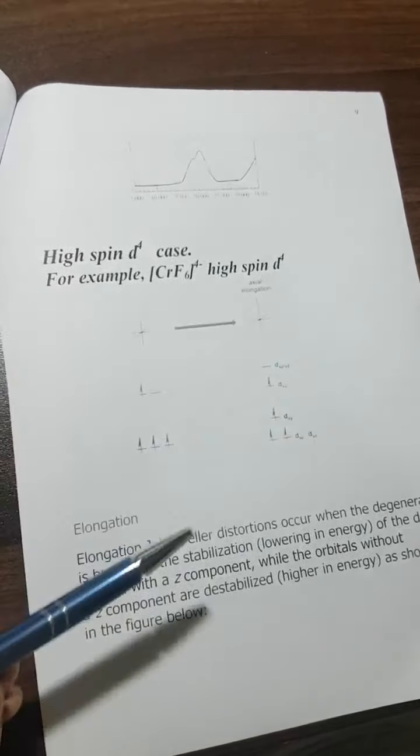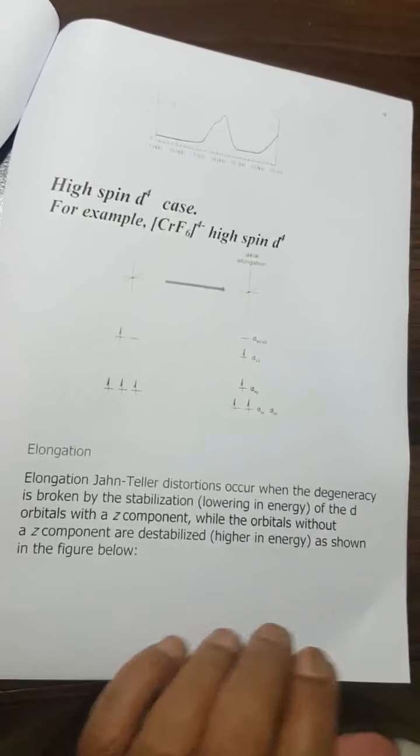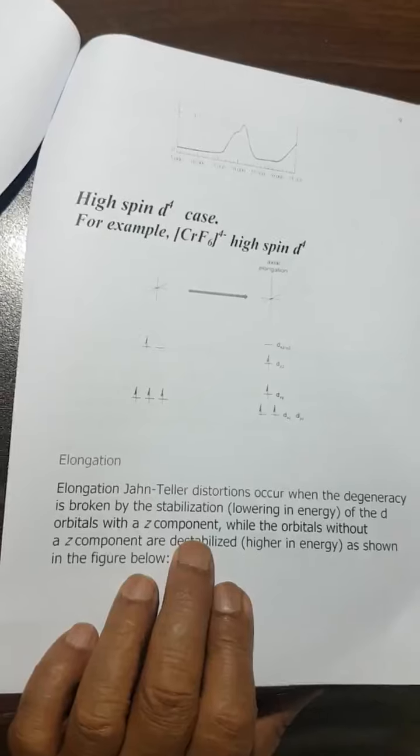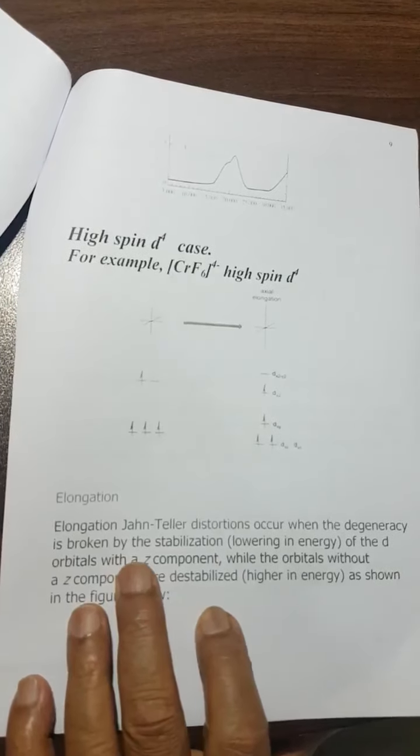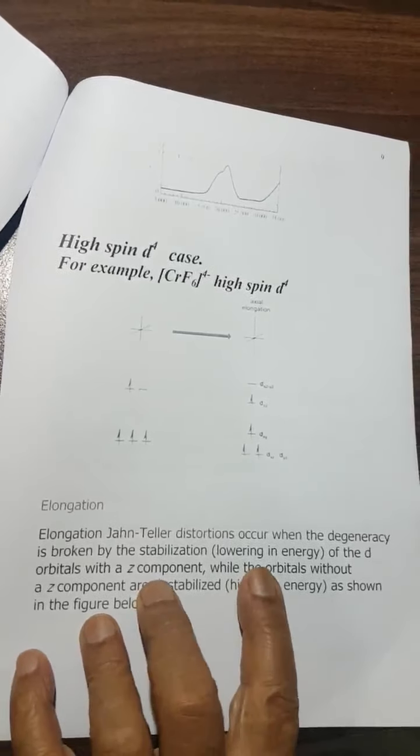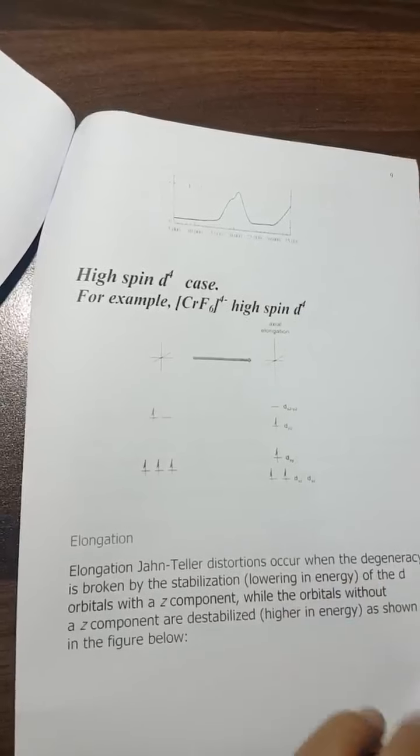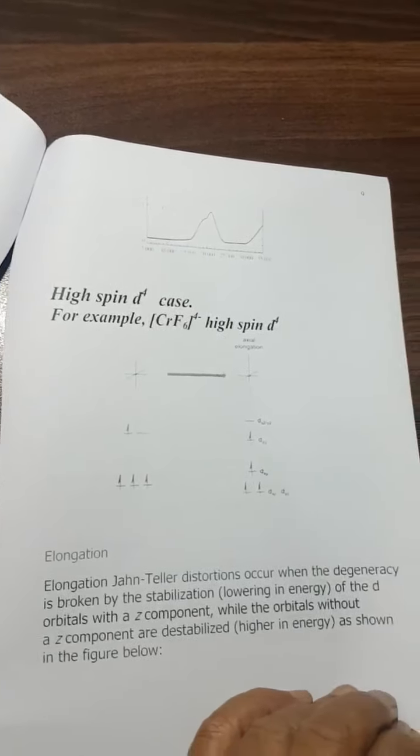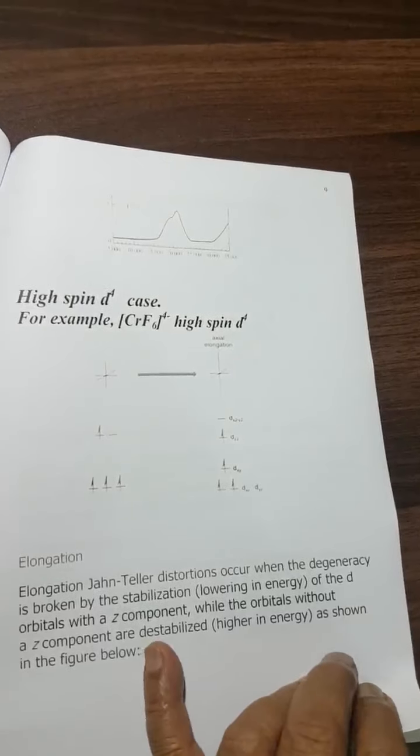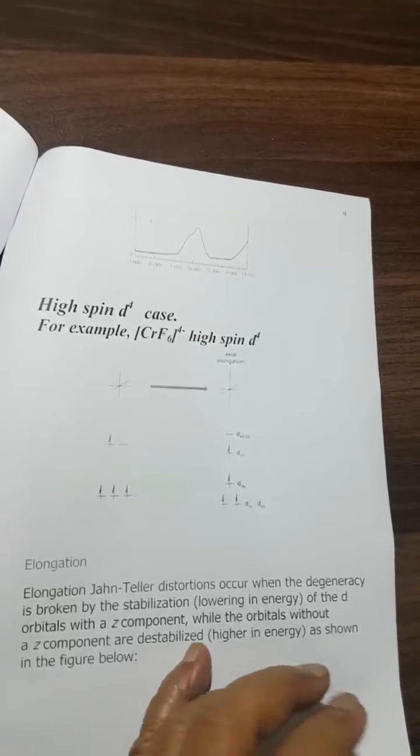Elongation distortions occur when degeneracy is broken by stabilization, lowering in energy of the orbitals with a Z component, while orbitals without Z components are destabilized and go up in energy.